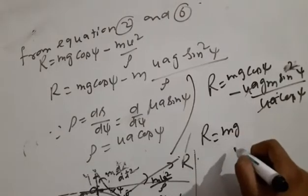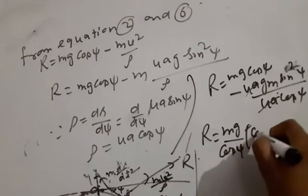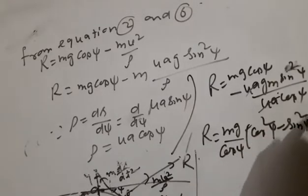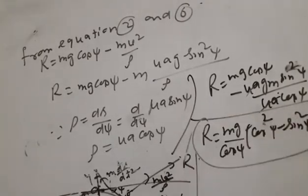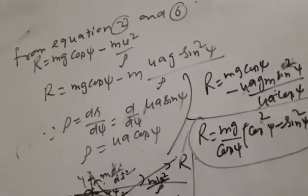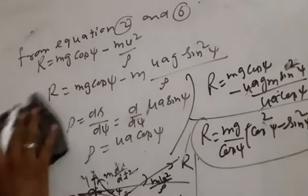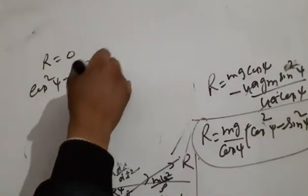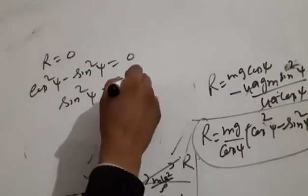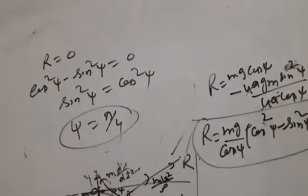Taking mg common: R = mg·(cos²ψ − sin²ψ)/cosψ. If the particle leaves the cycloid, then the reaction R = 0. Under this condition, cos²ψ − sin²ψ = 0, which gives sin²ψ = cos²ψ, and therefore ψ = π/4. The particle leaves the cycloid at angle ψ = π/4.